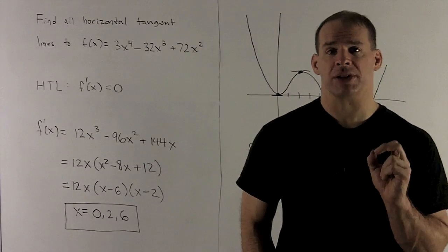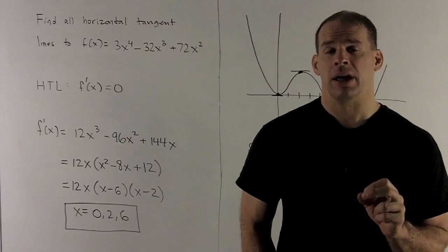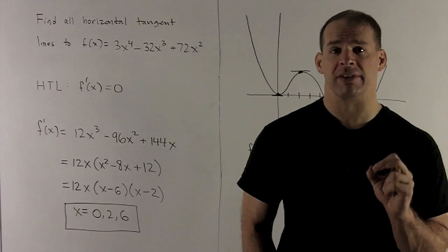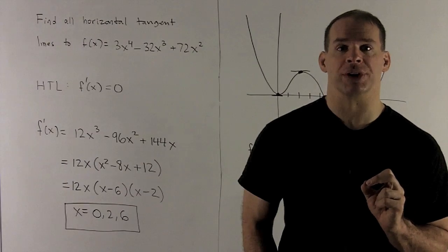So if I want a horizontal tangent line, that's going to mean the slope is equal to zero. If I have a tangent line, the slope is given by taking the derivative of our function evaluated at the point that we're interested in.